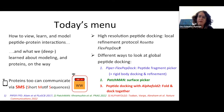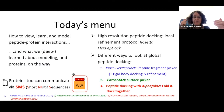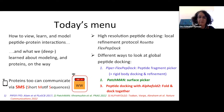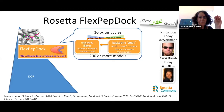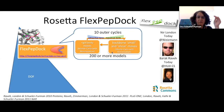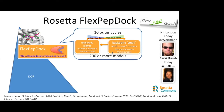Our group is interested in understanding the basic principles governing the interaction between peptide motifs and peptide binding domains, and how context affects these interactions. Today I'll talk about our main project: developing different tools to model these interactions. We have a local RosettaFlexPepDock protocol that allows high-resolution refinement of peptides bound to proteins, and I'll extend this to global docking with three very different approaches.